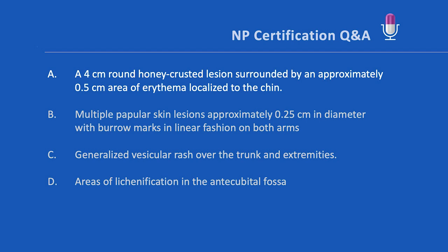Option C: a generalized vesicular rash over the trunk and extremities. This really sounds more like varicella or some other form of viral exanthem — simply a fancy way of saying it is a rash that accompanies a viral illness. Kids are far more likely to have skin lesions with a viral infection than adults are. You would expect that if this child had a viral exanthem, we would also hear that the child didn't feel well and had fever, since this represents the dermatologic manifestation of a systemic illness.